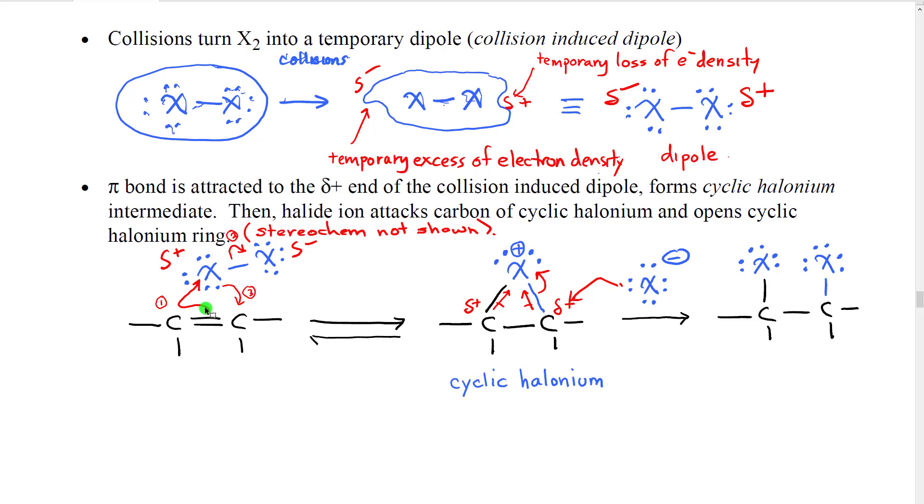So that we get sort of this reshuffling of electrons. And what we get, generally accepted to be without an intermediate, is this intermediate right here. We get this three-membered ring molecule. The halogen has a positive charge because of formal charges. And this is called a cyclic halonium ion. Halogen, onium being positive charge.